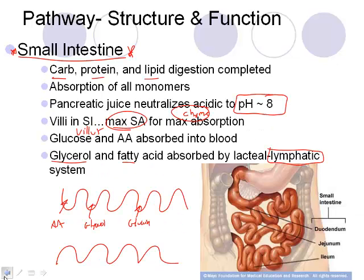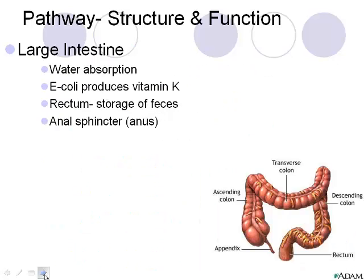There are three parts of the small intestine: the duodenum, which is the beginning part where the majority of absorption takes place; the jejunum; and the ileum. In this course, you'll really only hear us refer to the duodenum for the most part.